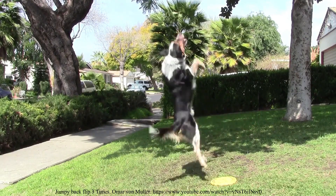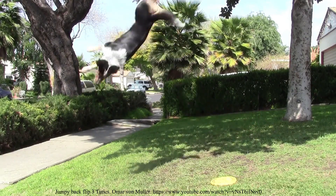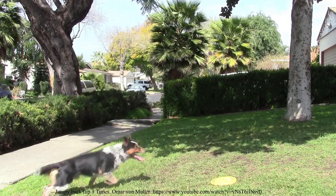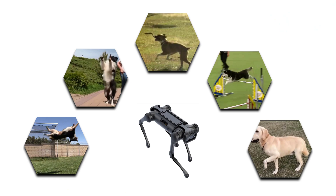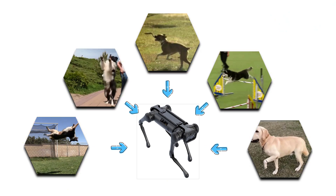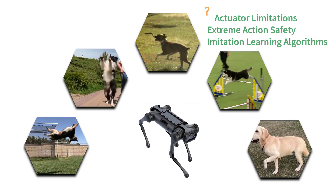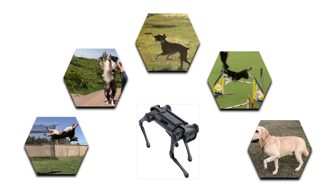By executing a backflip, a dog can land safely with the correct posture to minimize the impact. When robots master complex actions, considerations such as actuator limitations, safety, and algorithms become important. We aim to help quadruped robots acquire the challenging movements of quadrupeds through imitation learning.